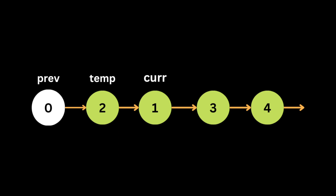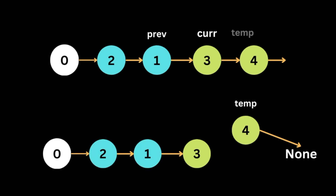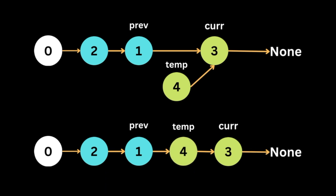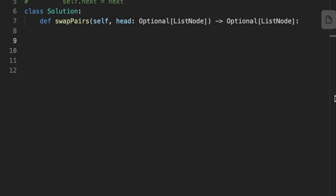After swapping the first two adjacent nodes, to perform another swap for the remaining nodes we update the 'previous' variable to reference the current node, and move the current node to the node after itself. The same process repeats: move temp to the next node of current, update the next pointer of current to the node after temp, update temp's next to current, and update previous's next to temp. The loop stops after two swaps since the input list has four nodes.